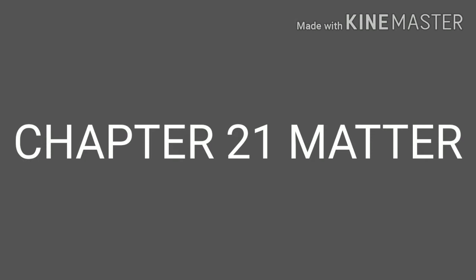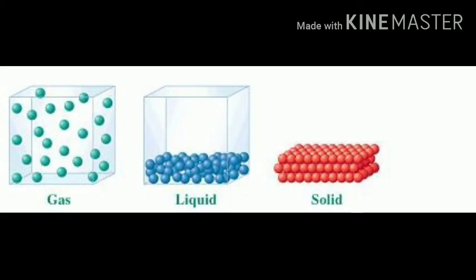Everything around us is made up of molecules that occupies space. Humaree aspas jo bhi cheeze bani hai, wo bhoat chote chote particles jinko molecule kehte hai, unki bani hai. Aur ye molecules jagein gherte hain. Everything that has mass and occupies space is known as matter. Koi bhi cheez jagein gherti hai aur uska koi weight hai, koi wazn hai, mass hai, usko hum bolte hain matter.